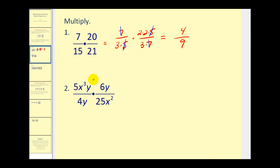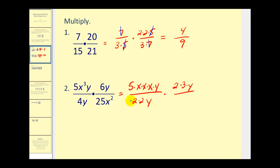We'll follow the same procedure on this next problem. Even though there are some shortcut methods for simplifying here before we multiply, I'm going to expand all of these. So five x cubed y would be five times three factors of x times y. Four y would be two times two times y. Six y would be two times three times y. Twenty-five x squared would be five times five times x times x. Now we'll identify the common factors between the numerators and denominators. Here we have two over two, a y over y, a five over five, an x over x, and another x over x. Looks like we have everything.